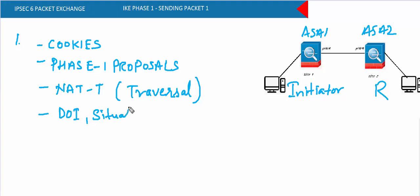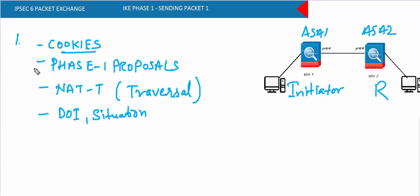We've already seen what cookies are — if you need more information you can go back to my previous video. Before sending the first message, both initiator and responder generate cookies. The initiator generates the initiator cookie, the responder generates the responder cookie. When the initiator sends the first message it puts the initiator cookie in the message; the responder cookie field remains blank.